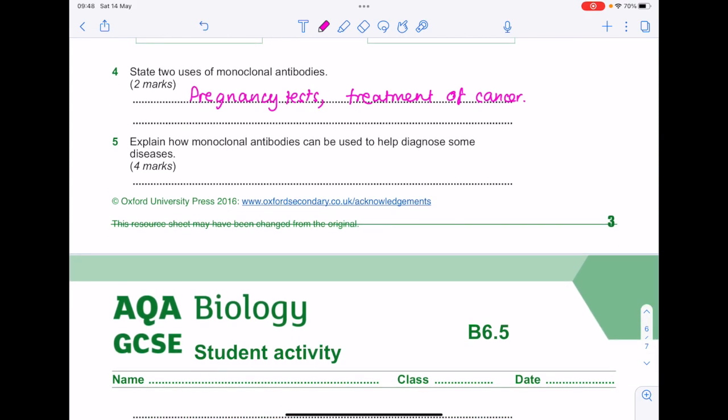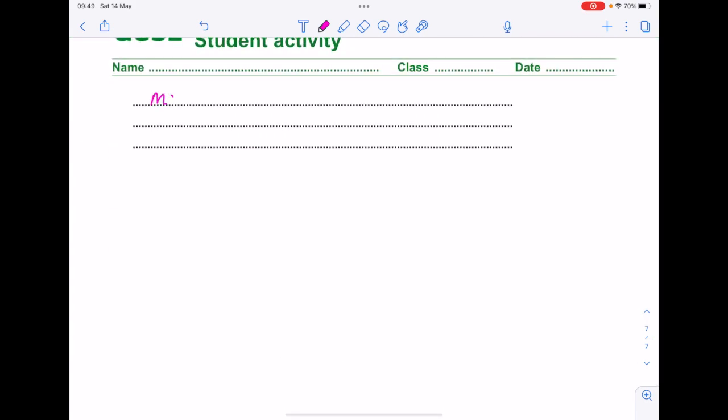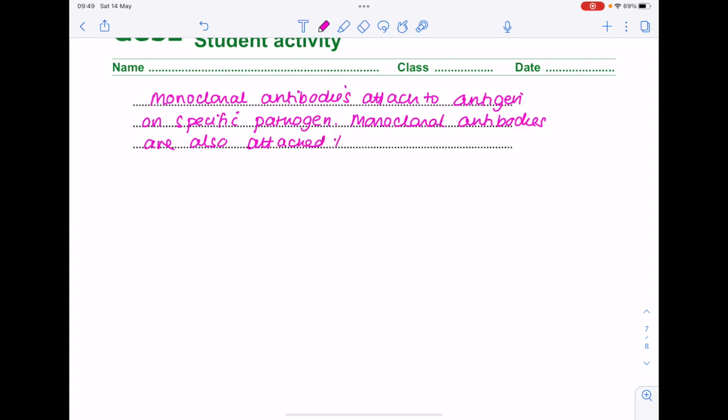Explain how monoclonal antibodies can be used to help diagnose some diseases. Remember with the diagnosis it means that we do need some kind of dye attached or fluorescence and UV light so we can actually view it. So how is this going to work? Well first of all we know that the monoclonal antibodies attach to antigen on specific pathogen. So that pathogen causes the disease. Monoclonal antibodies are also attached to a dye. This enables the disease to be identified.